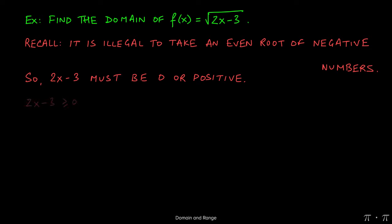Now, easiest way to do this is to solve the inequality 2x minus 3 is greater than or equal to zero. If it's equal to zero, that takes care of this case. If it's greater than zero, we know that it must be positive, and that takes care of the second case.